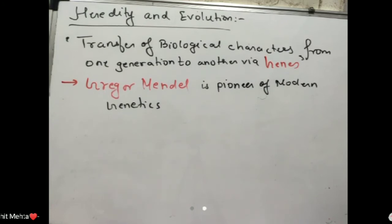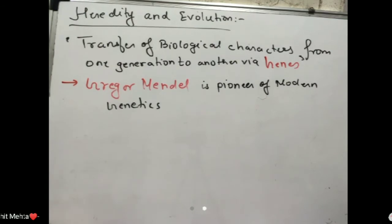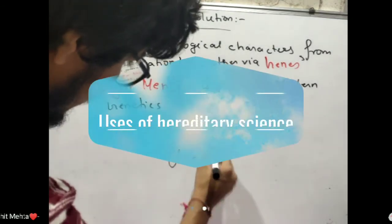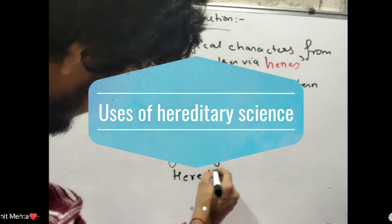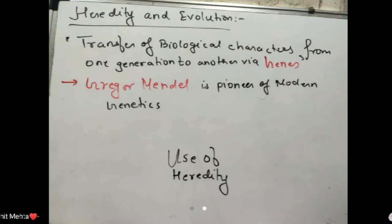You should read all this once — it is important for objectives. Now, the most important thing that we need to understand: we are studying heredity, so what is the purpose? Why do we study it? The use of hereditary science — you might not relate to it now, but when you go to higher standards and take science, you will understand there is a branch called genetic engineering.